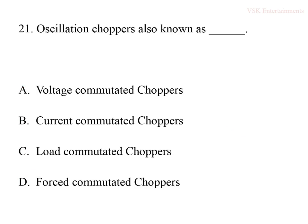The twenty-first question: oscillation choppers are also known as — options are voltage commutated choppers, current commutated choppers, load commutated choppers, or forced commutated choppers. Oscillation choppers are also known as Henman's choppers, and these are a type of voltage commutated choppers. So option A is the correct answer.